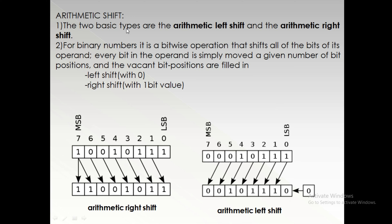Coming to arithmetic shift — the two basic types are arithmetic left shift and arithmetic right shift. For binary numbers it is a bitwise operation that shifts all bits of the operand. Every bit is simply moved a given number of bit positions. The vacant bit positions are filled with 0 for left shift, and with the value of the most significant bit for right shift. While performing arithmetic right shift, the vacant position is filled with the last bit present in the tuple. The bit in the 7th position is transferred to both the 7th and 6th bit positions. Arithmetic left shift is the same as logical left shift, with the vacant position filled with 0.